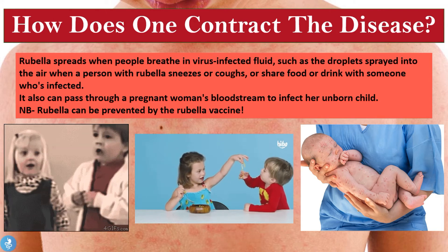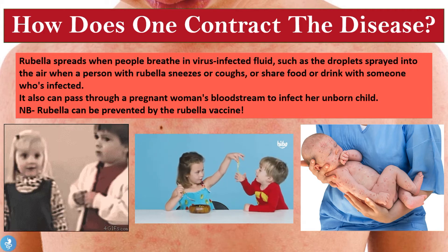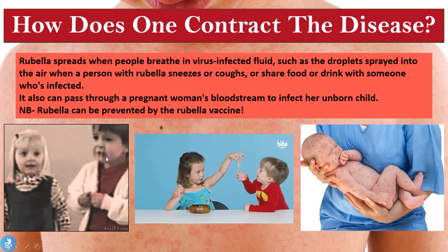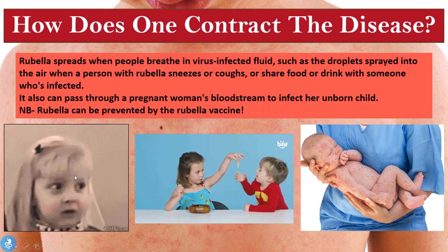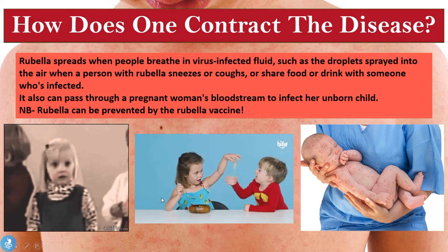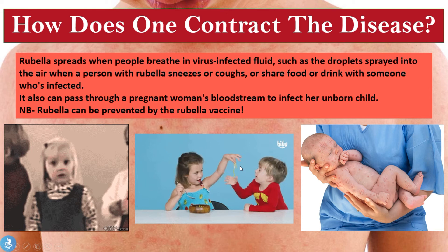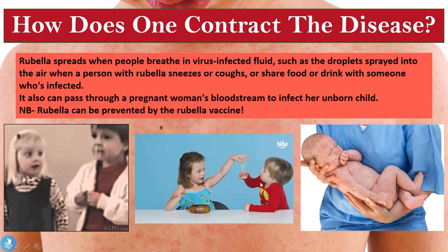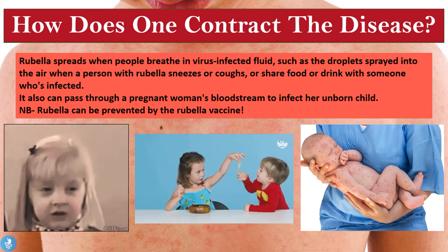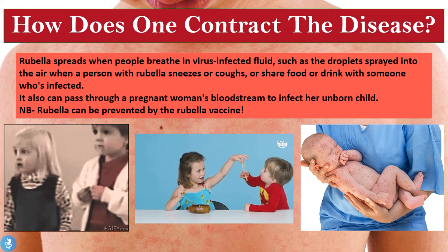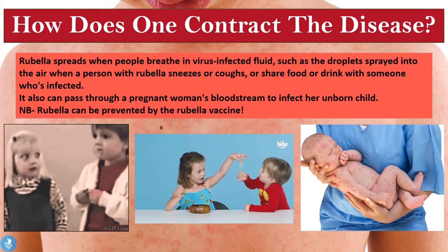Importantly, rubella can be prevented by the rubella vaccine. The disease is quite contagious and spreads easily when someone coughs or sneezes viral particles that a nearby person inhales. It can also be transmitted through sharing food or drinks — an uninfected child sharing food with an infected child is at very high risk of contracting the disease. The final route of transmission is transplacental, where a pregnant mom who has contracted the disease can pass it on to her unborn child.